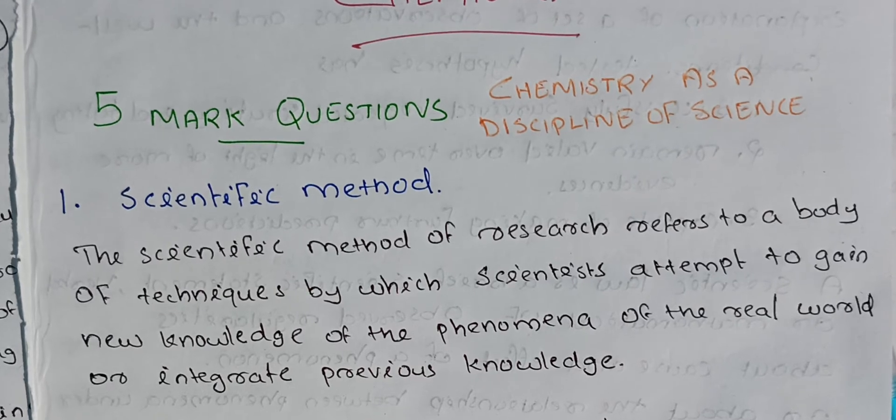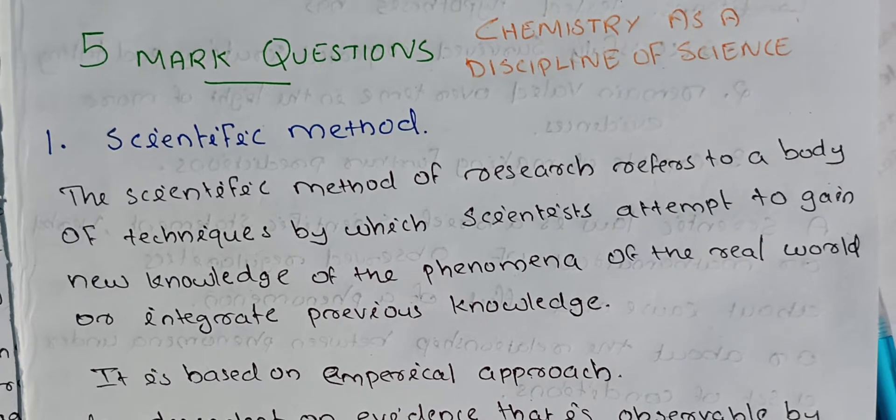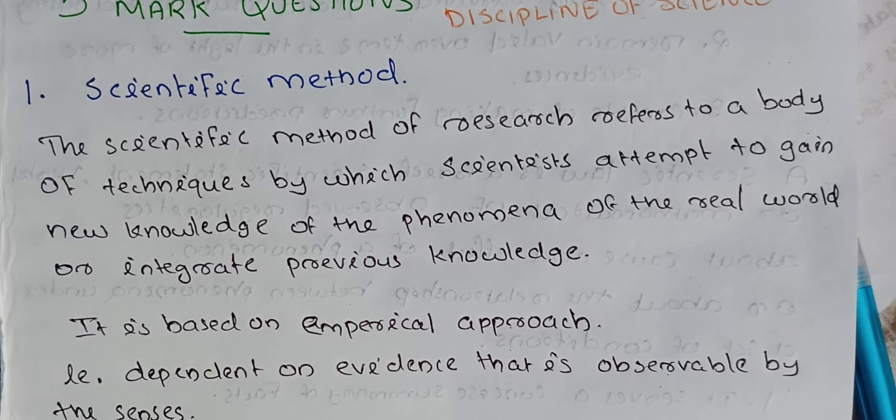The next is the scientific method. The definition is: Scientific method of research refers to a body of techniques by which scientists attempt to gain new knowledge of the phenomena of the real world or integrate the previous knowledge.